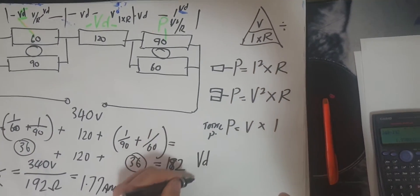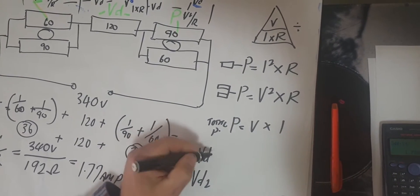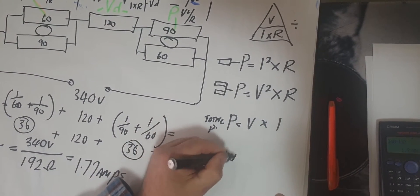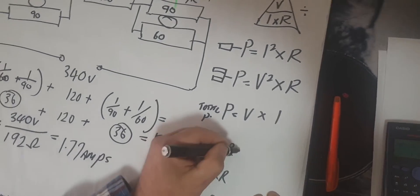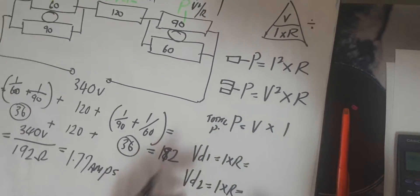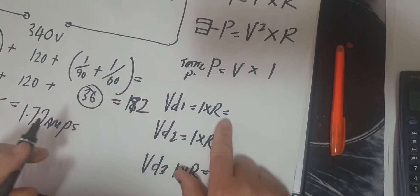So voltage drop 1, voltage drop 2, and voltage drop 3. If we have a look at this - I times R, I times R, I times R. Notice I'm doing all of your formulas, because this is stuff you've got to lay out. So the first one is I times R.